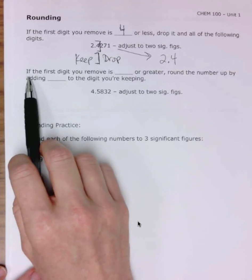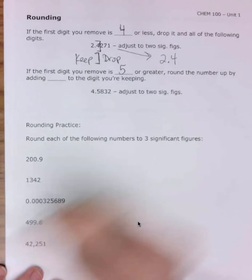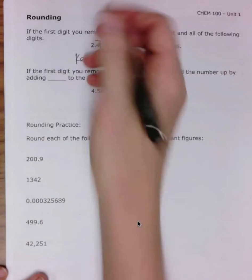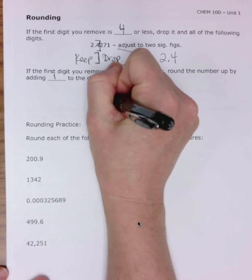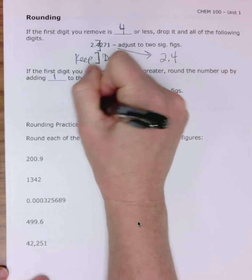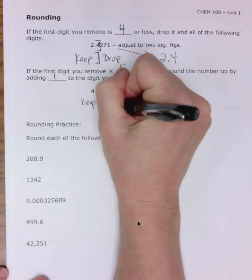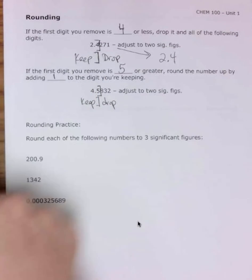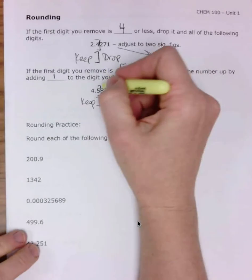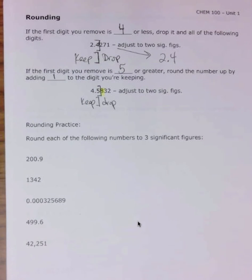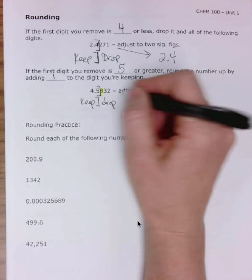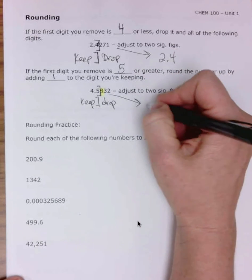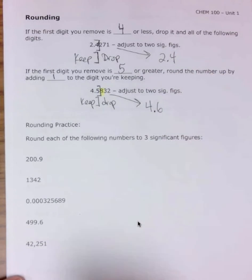If the first digit you remove is 5 or greater, round the number up by adding 1 to the digit you're keeping. For example, 4.5832 adjusted to two significant figures: I put my bracket after the 5, the first digit I'm dropping is 8, which is definitely greater than 5. So I add 1 to the 5 that I'm keeping, and I get 4.6.